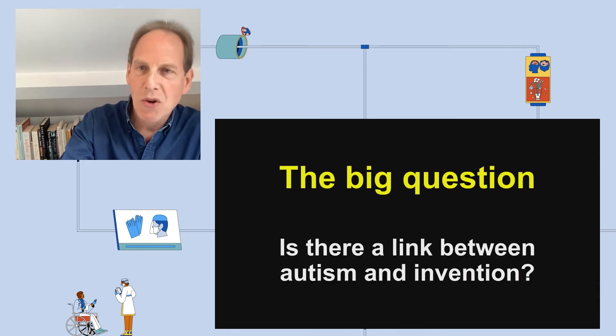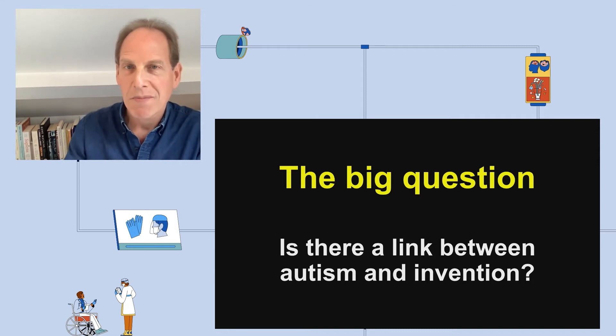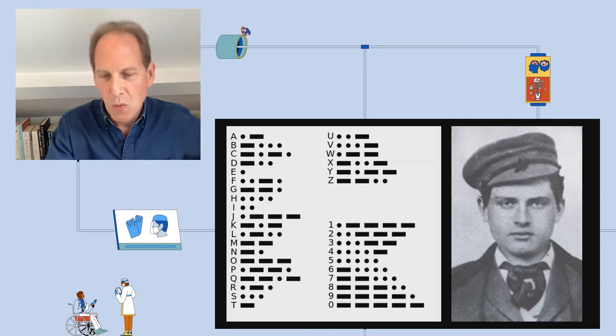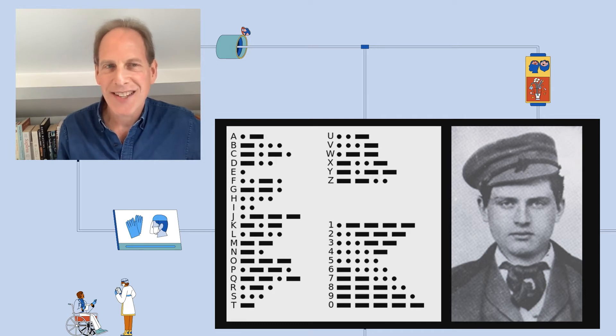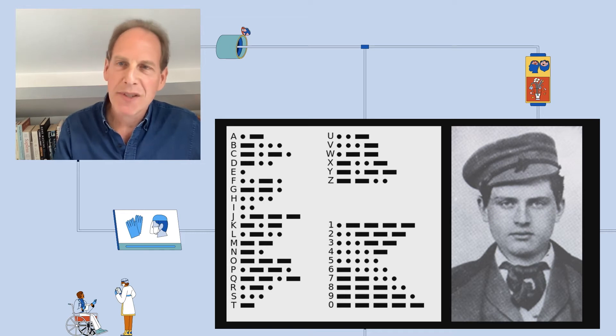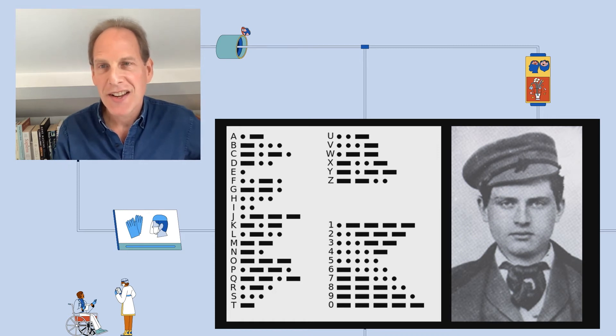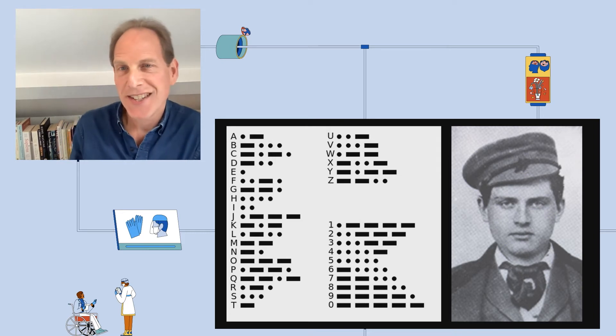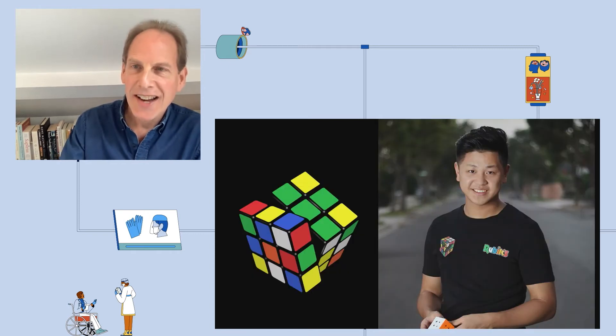But let's go back to our big question: is there a link between autism and invention? Well, anecdotally, many inventors show high levels of autistic traits. So this is the young Thomas Edison, who famously invented the first electric light bulb, but he invented non-stop. And as a teenager he was obsessed with Morse code, a system of patterns, and he even named his children Dot and Dash. And his wife moved a mattress into his workshop so that he could carry on inventing and experimenting all day and all night.